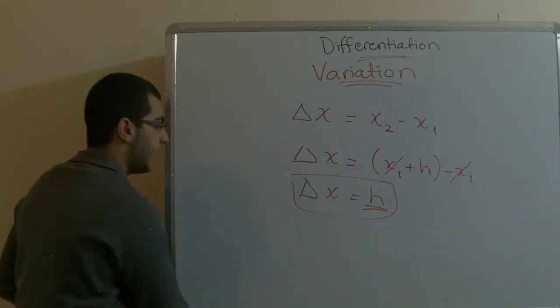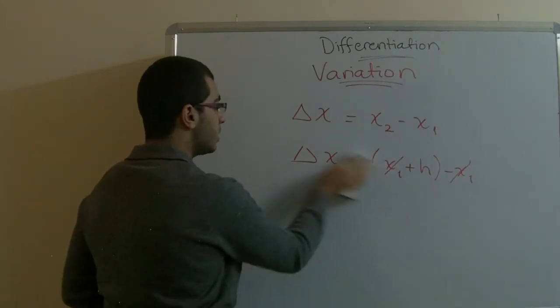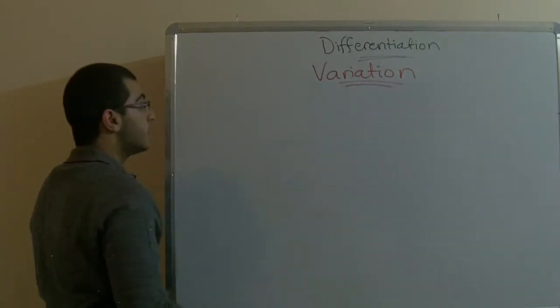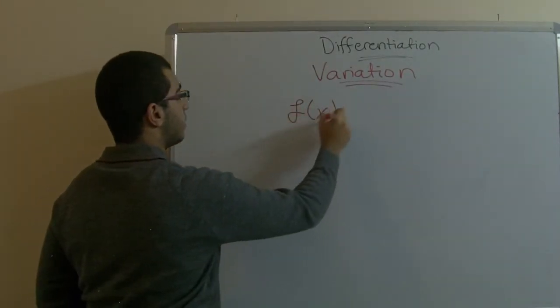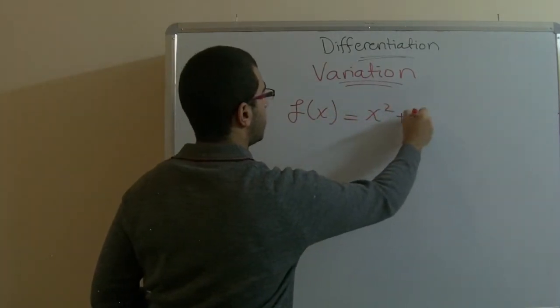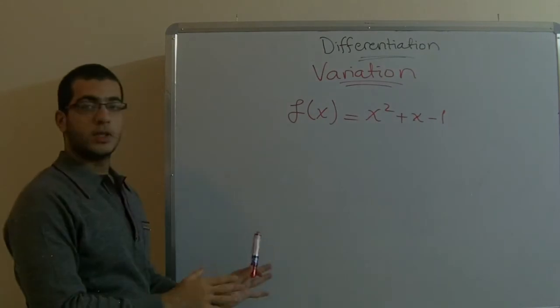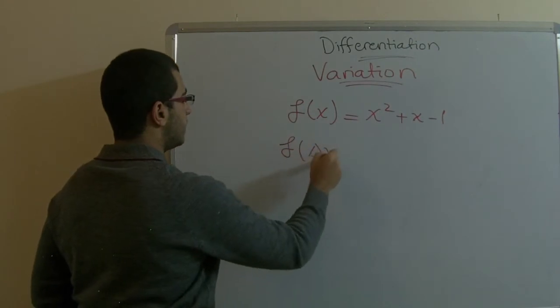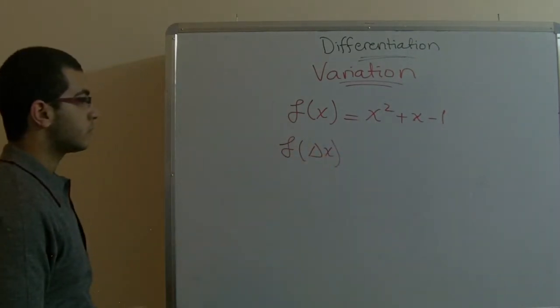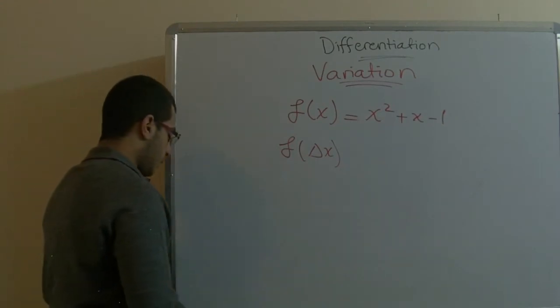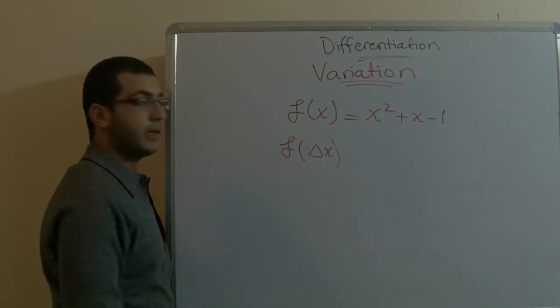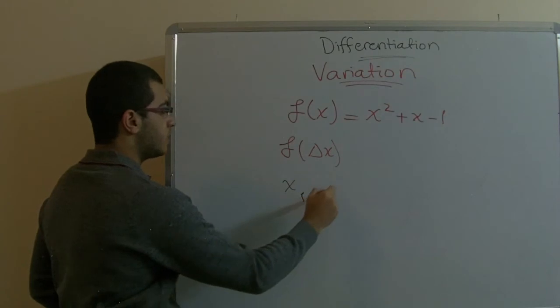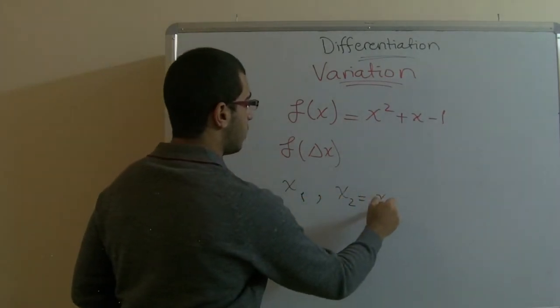What we need in our lesson today is to get the function of delta x. We're used to seeing functions like this: f(x), for example, equals x to power 2 plus x negative 1. So this is a function. But what if I want the f delta x? Here I have two values of x, I have x1 and x2, which equals x1 plus h.